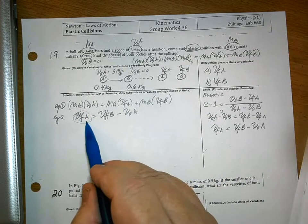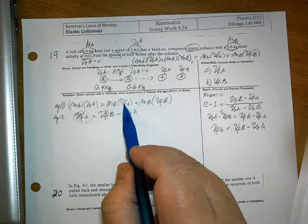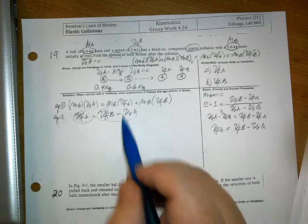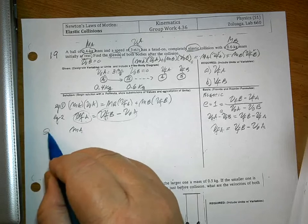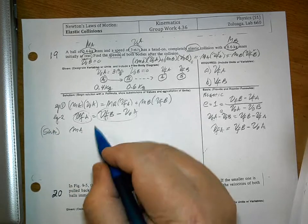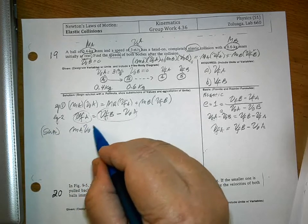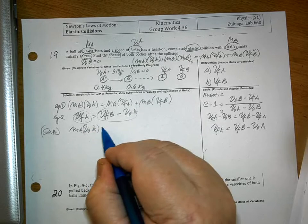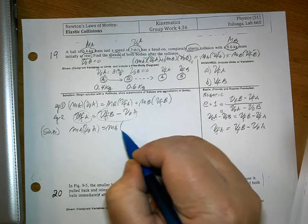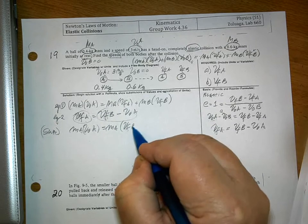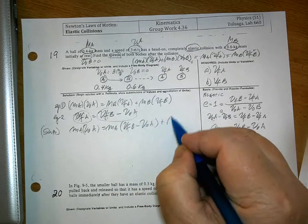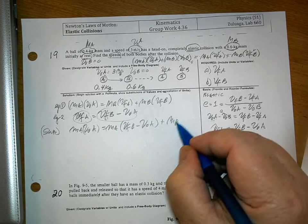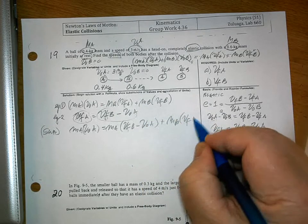By substitution, we're going to use this here, meaning I'm going to plug this into there. So, substituting: MA VOA is equal to MA times VFB minus VOA plus MB VFB.